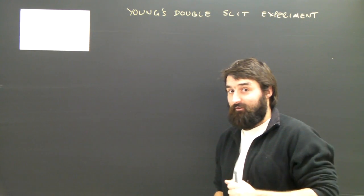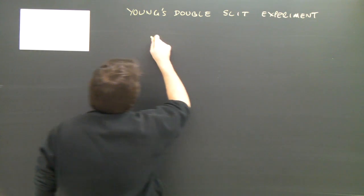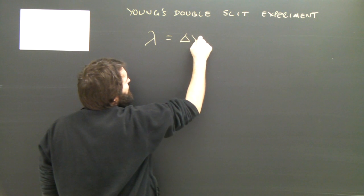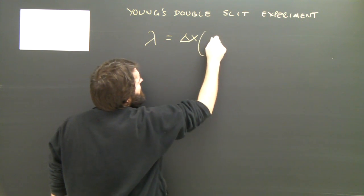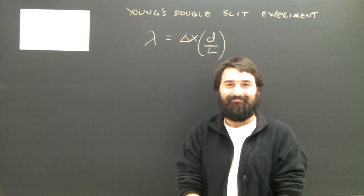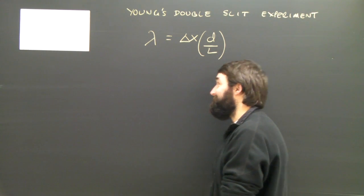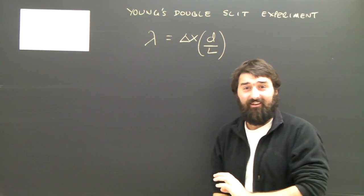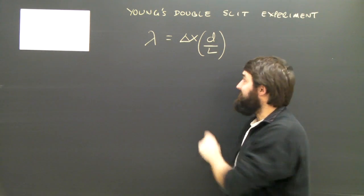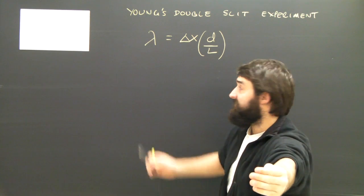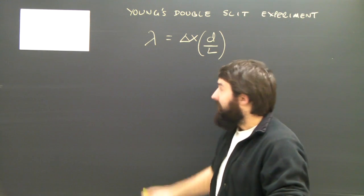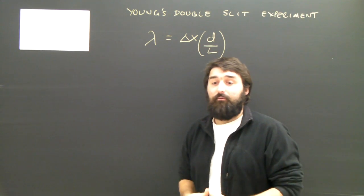With a little bit of math — you can look in your book — the formula is: wavelength equals delta x times d over L. Here, d is the distance between the two slits and L is the length from the slits to the screen. I'm going to show you exactly what we're talking about right now and explain this before we do an example.